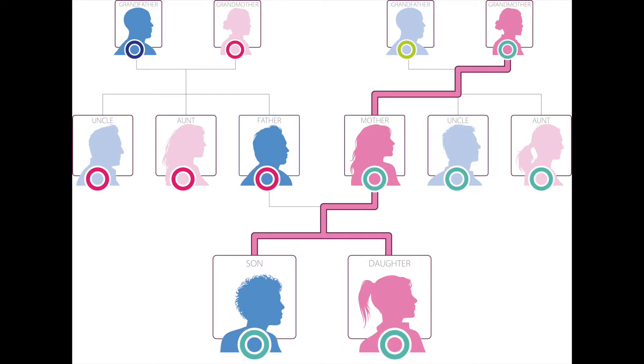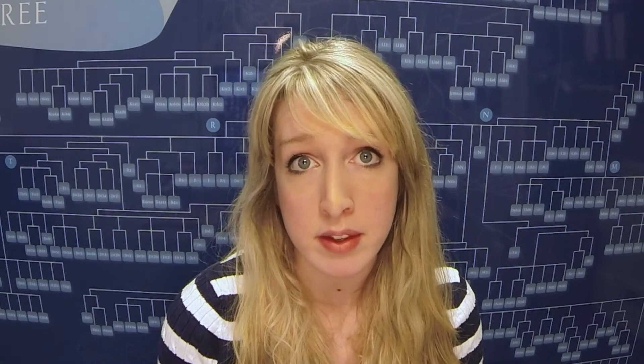Mitochondrial DNA is only passed down by women, but it can be received by both men and women. It is also inherited as a block, and this block of DNA contains many markers which can be used to trace your ancient female ancestry.